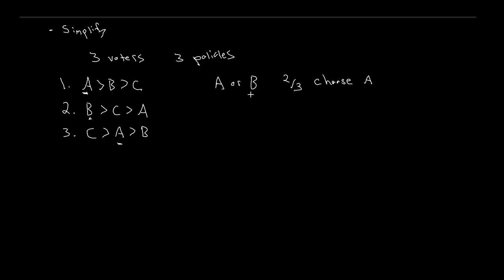Given that, and given our third assumption that if a majority favors one thing then that's what society favors, we see that in this pairwise fashion A wins out and we should choose policy A. But let's try a different pairwise comparison — B or C. Voter one chooses B over C, voter two chooses B over C, so again two-thirds choose B. We get a majority choosing policy B, meaning society is choosing policy B.